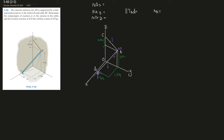The smooth uniform rod AB is supported by a ball-and-socket joint at A, the wall at B, and cable BC. We need to determine the components of reaction at A, the tension in the cable, and the normal reaction at B — which is just the normal force going in the x-direction coming straight out. The rod has a mass of 20 kg.